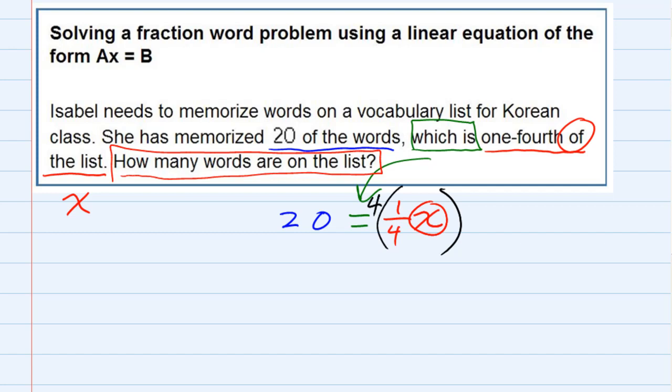But if I multiply the right hand side by four, I must also multiply the left hand side by four. And on the right hand side, the four and the one fourth cancel, leaving me with just x. And on the left hand side, I have 80, four times 20.